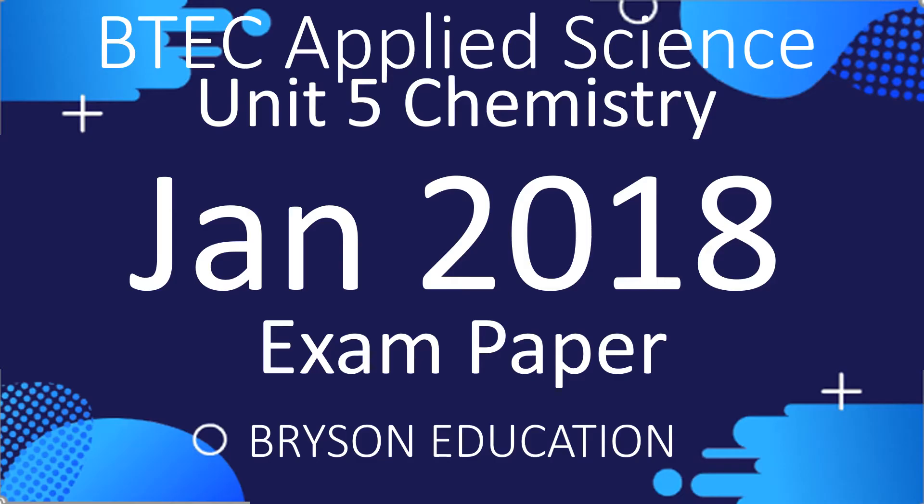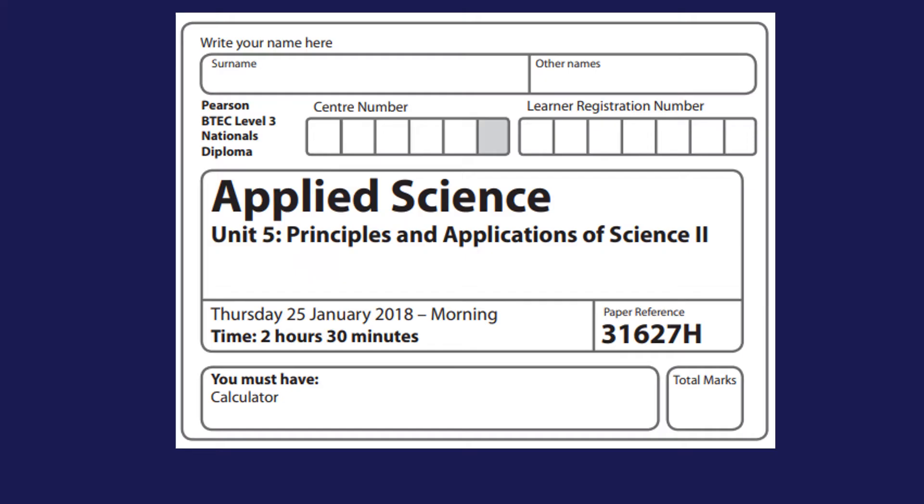Hello there, welcome to my channel on chemistry lessons. This is BTEC Applied Science, Unit 5 Chemistry, and we're going to be looking at the January 2018 exam paper. You were given two and a half hours for this exam, which includes sections A, B and C covering biology, chemistry and physics.